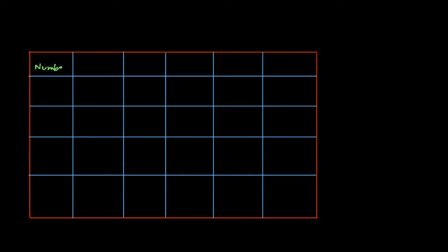First, what you have to do is make 6 columns and 5 rows like shown here, and then start naming them. The first box should be your numbers, the second box should be your degrees, and these three boxes should be your sine, cosine, and tangent.